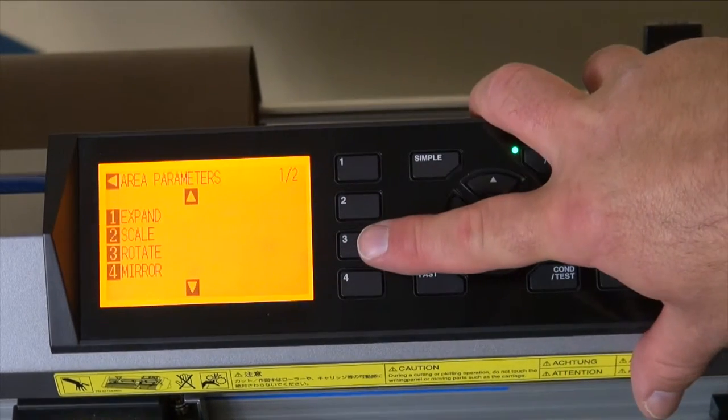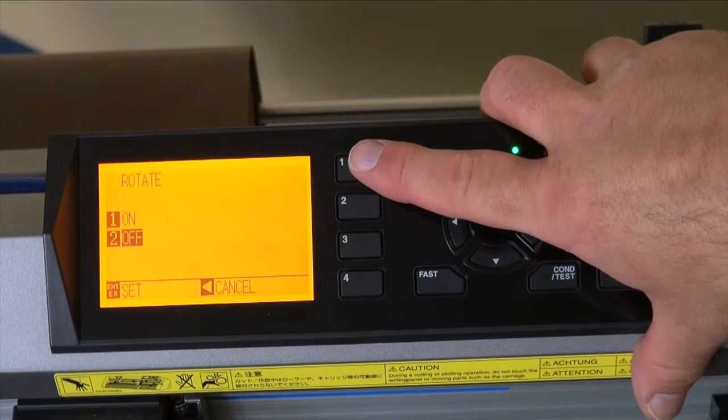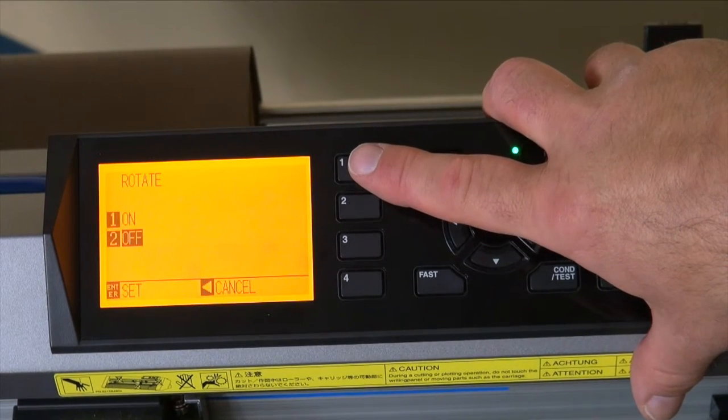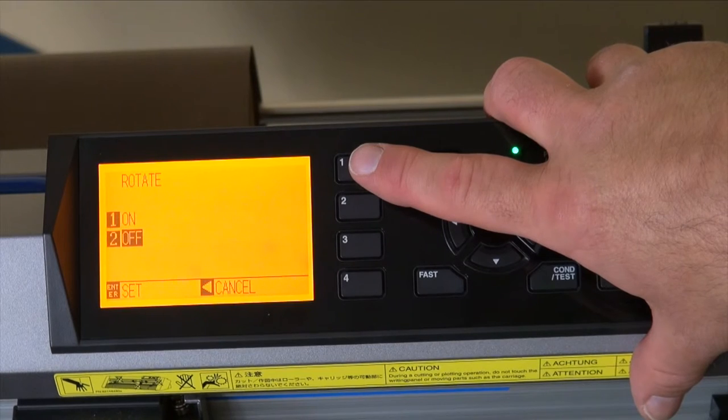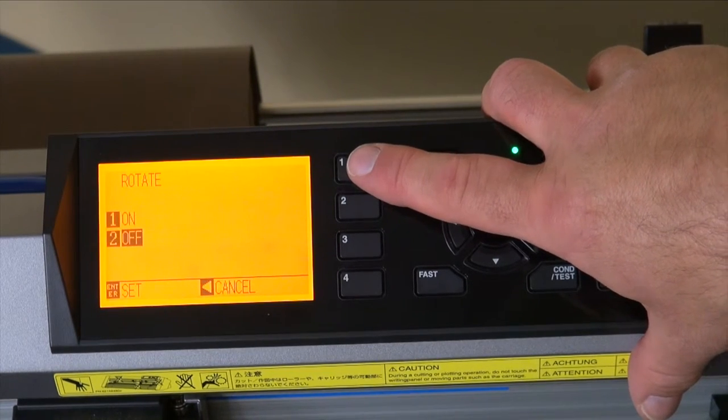You want to press 3 for rotate. Rotate on will switch the cutting direction from the Graphtec cutting from right to left to the Graphtec cutting from left to right.